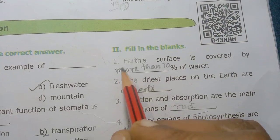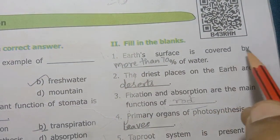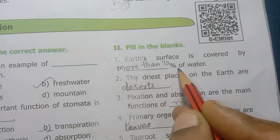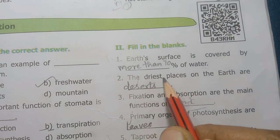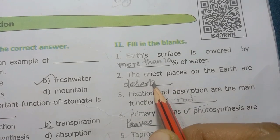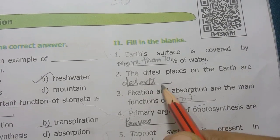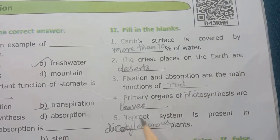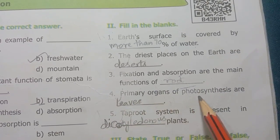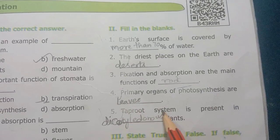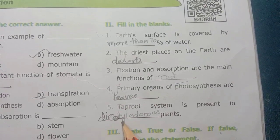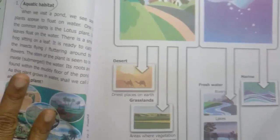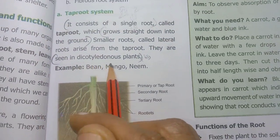Roman numeral 2 — Fill in the blanks. First: Earth's surface is covered by more than 70 percent of water. Second: The driest places on earth are deserts. Third: Fixation and absorption are the main functions of root. Fourth: Primary organs of photosynthesis are leaves. Fifth: Taproot system is present in dicotyledonous plants.